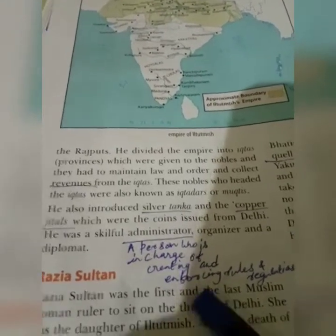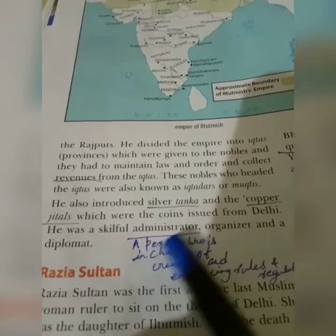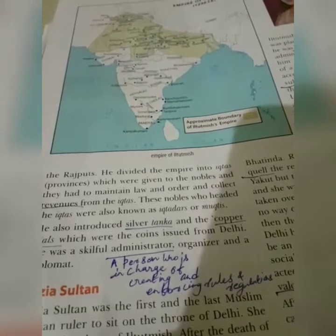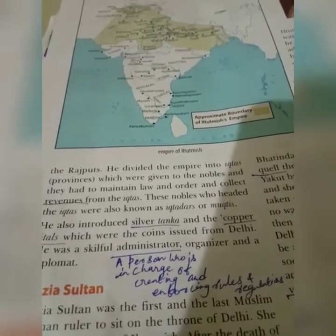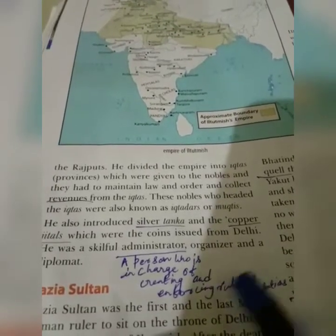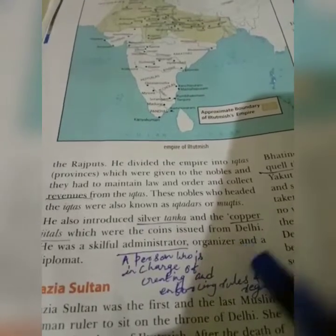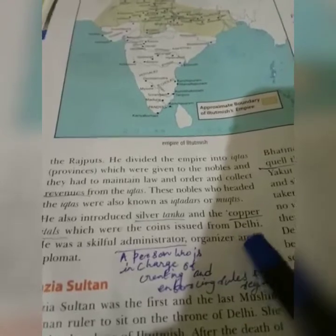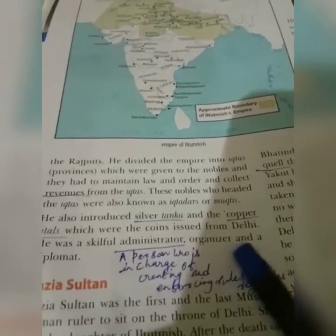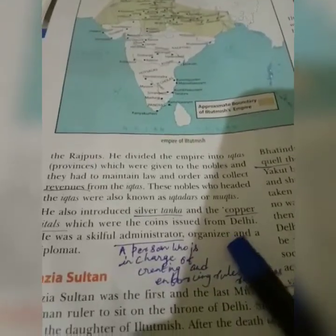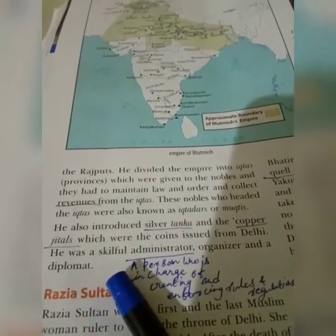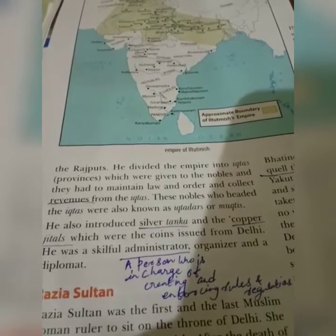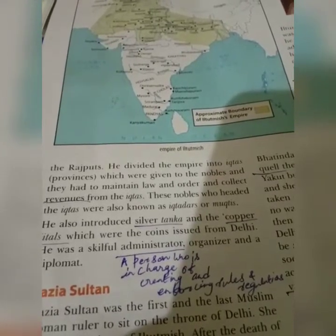Iltutmish was a skillful administrator — a person in charge of creating and enforcing rules and regulations — as well as an organizer and a diplomat, someone who acts in a way that does not cause harm to others. We have now covered Iltutmish's rule.